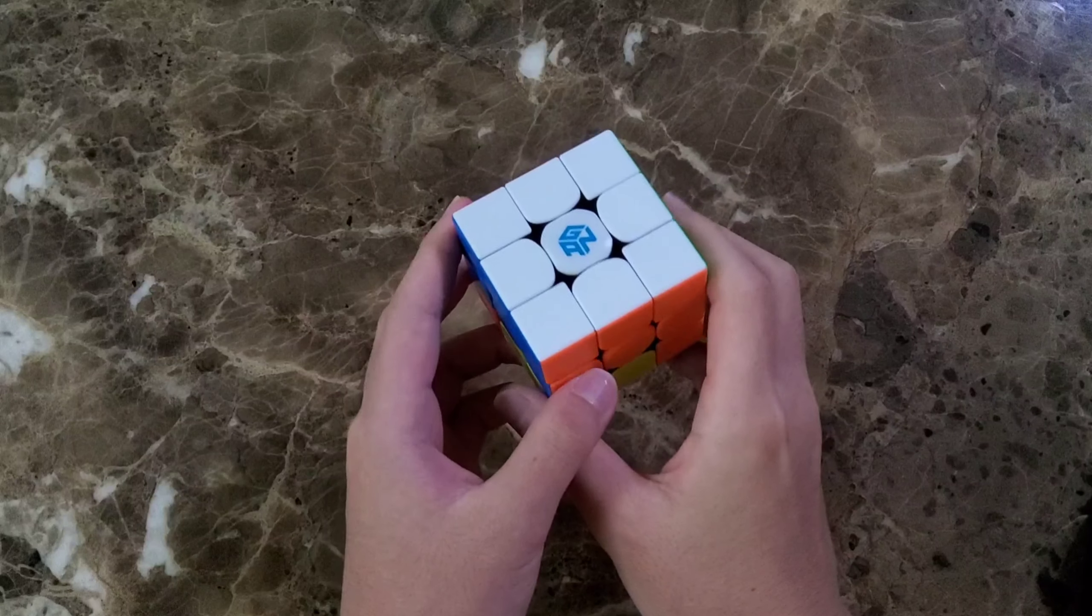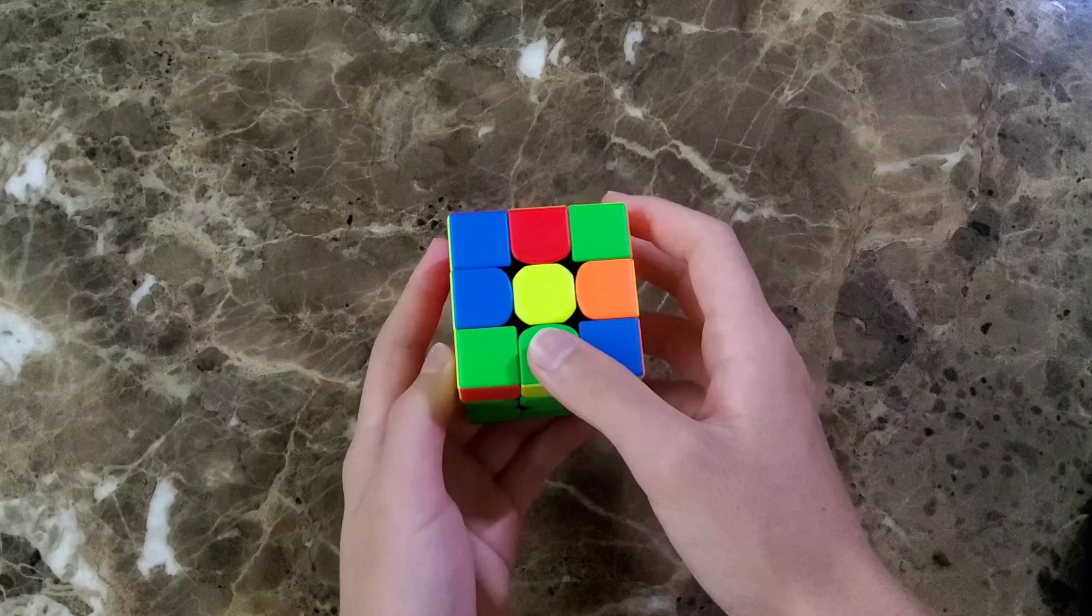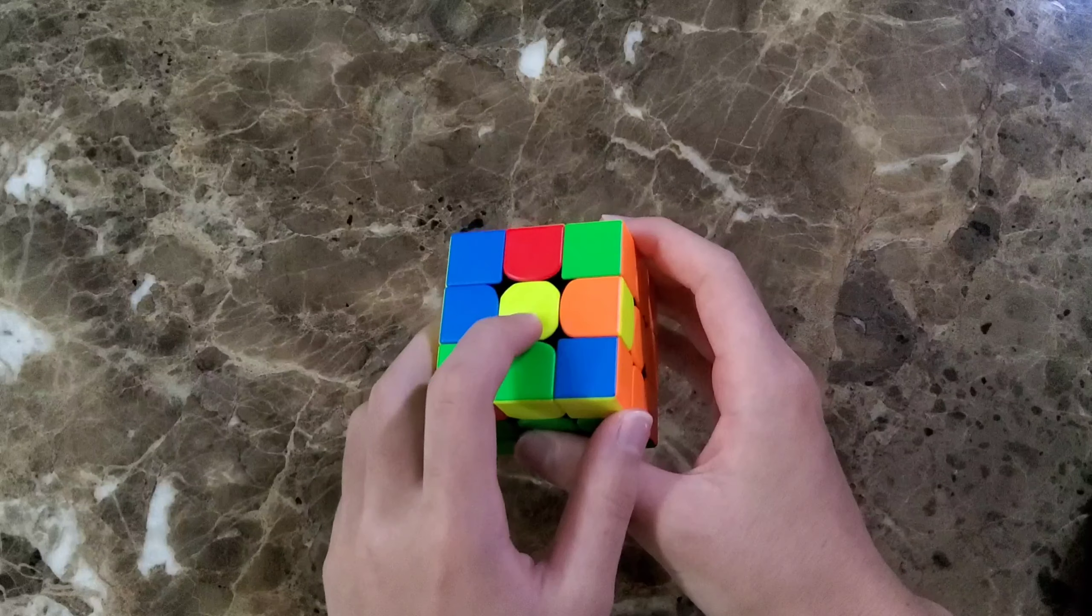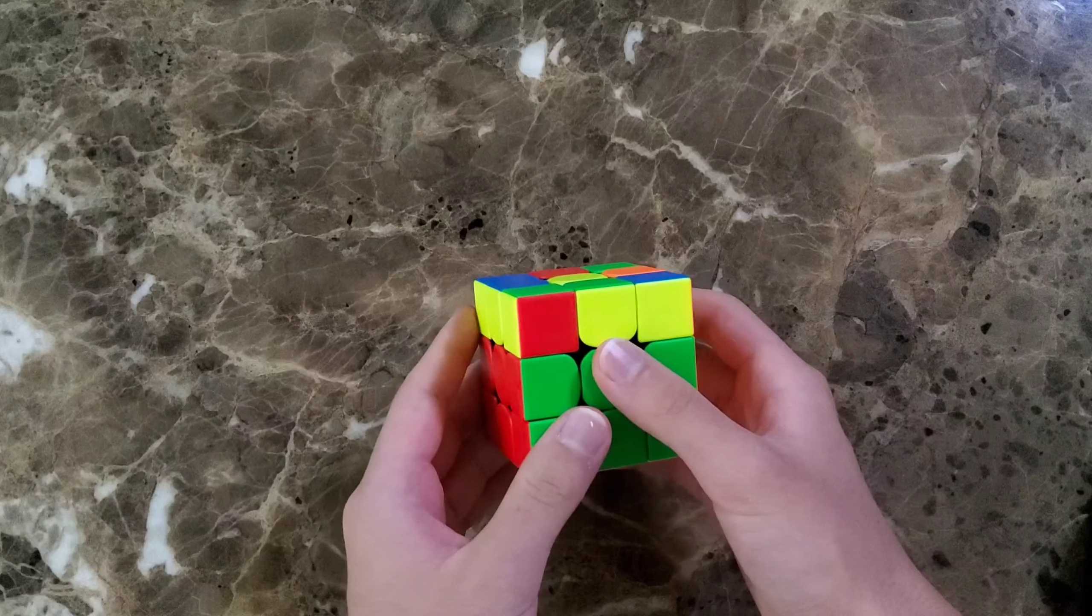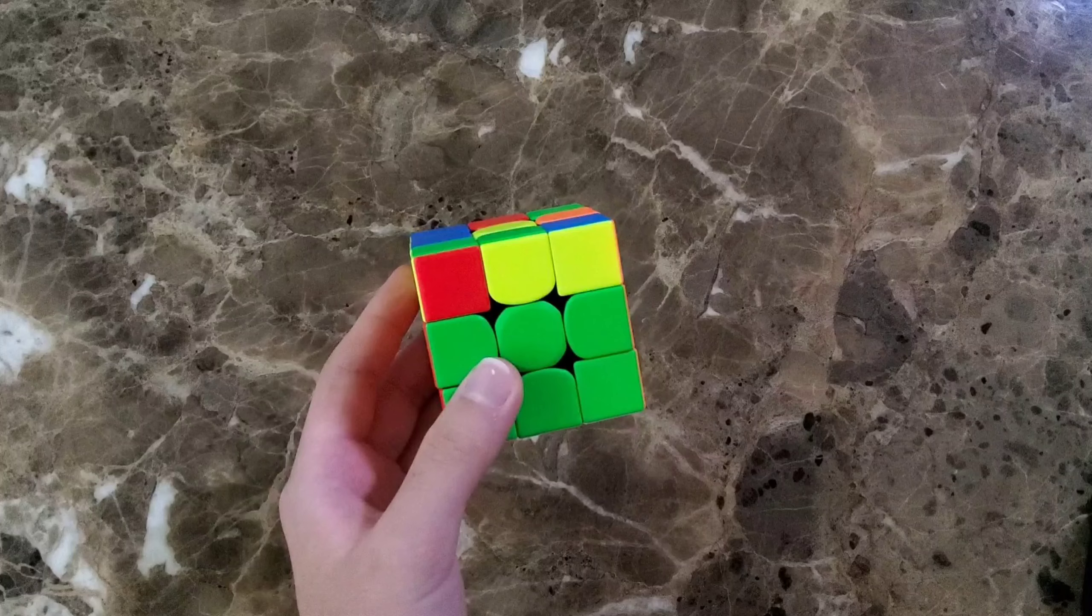When you're done solving F2L, you should solve the yellow face. It takes time and is difficult to solve if there is a yellow dot on it. So today, I'll show you some tips that you can use when it is a yellow dot.